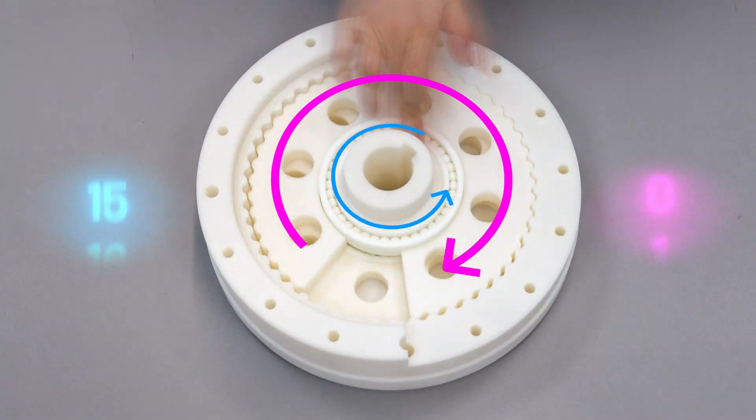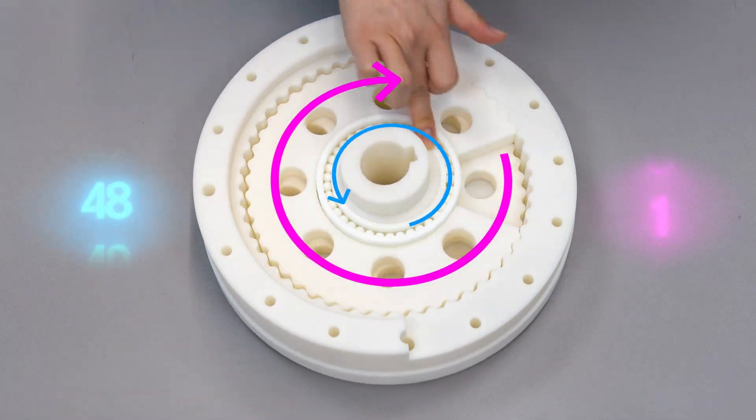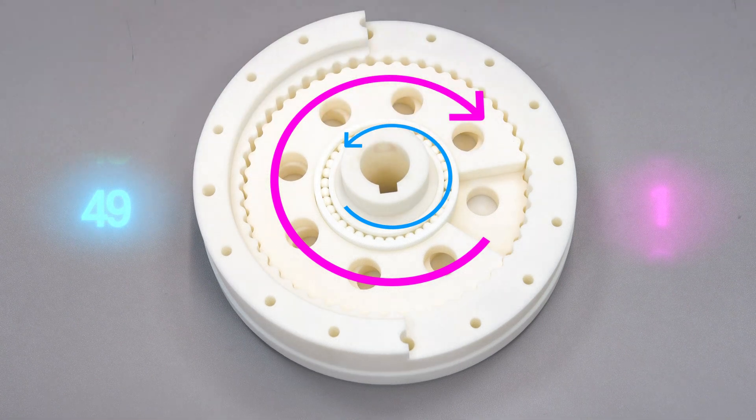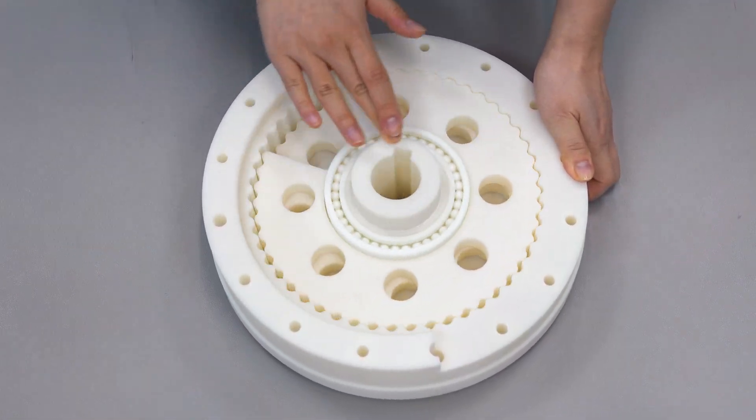With this gear ratio, when the input shaft turns 49 times, the output turns just once. And if the input spins clockwise, the output rotates counter-clockwise.